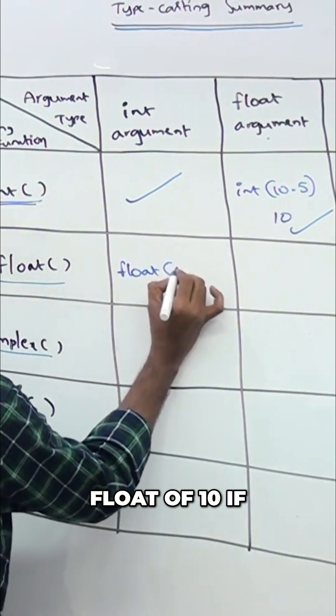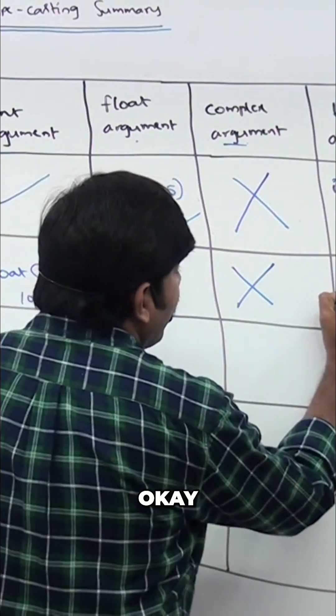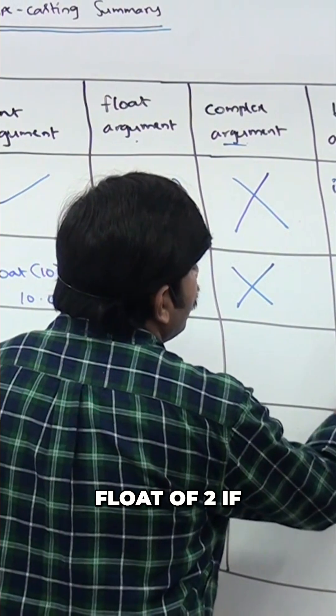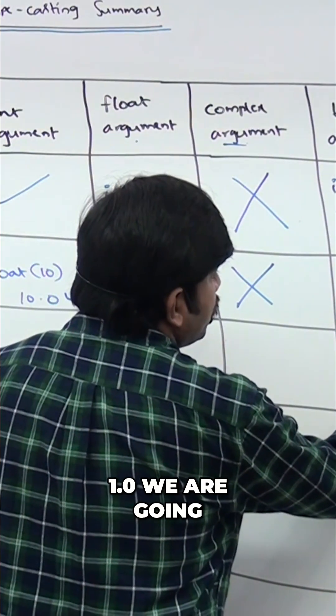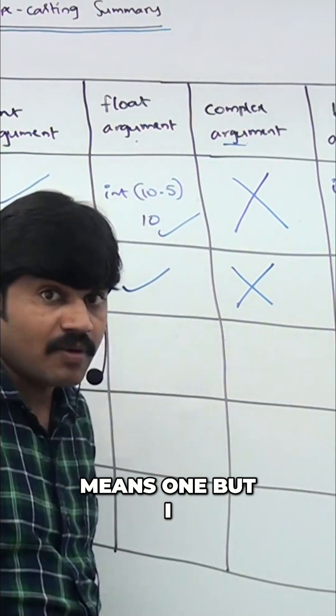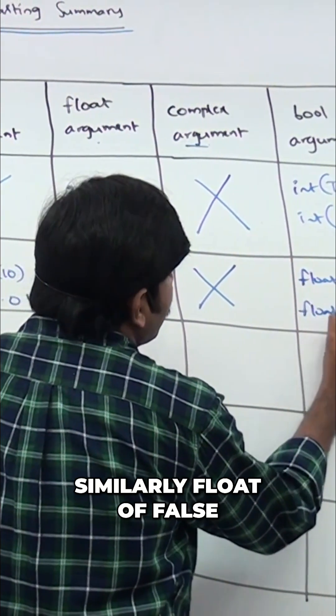float(10) gives 10.0 as the answer. float(true) gives 1.0 because true means 1, but as a float value it becomes 1.0.